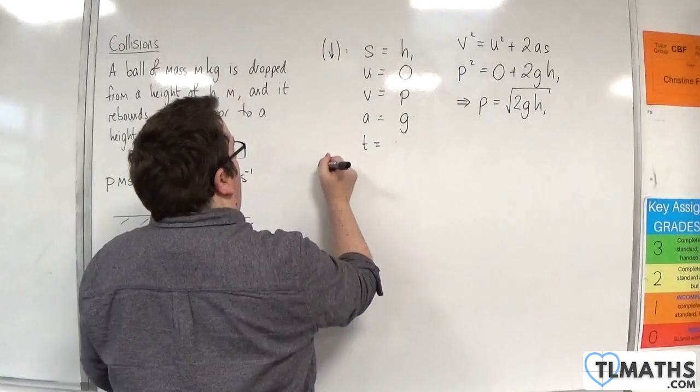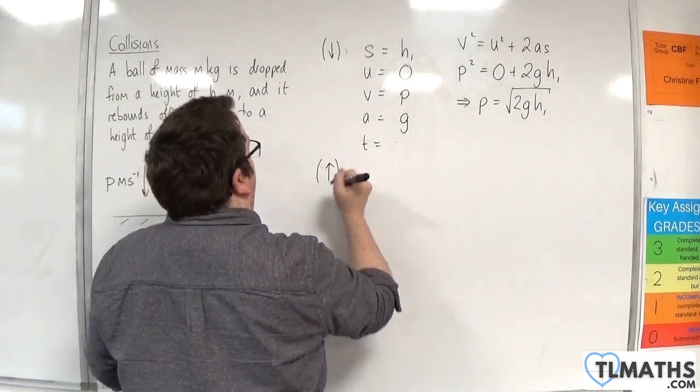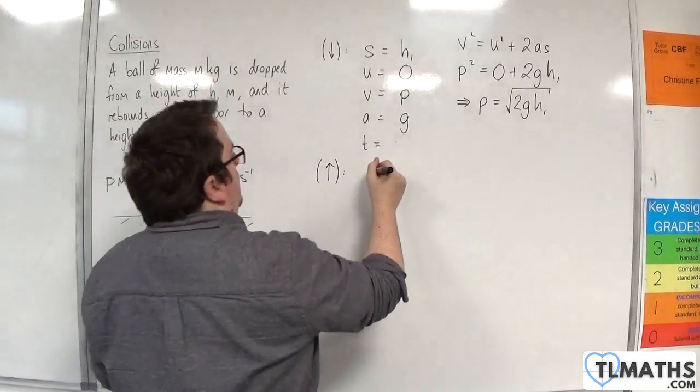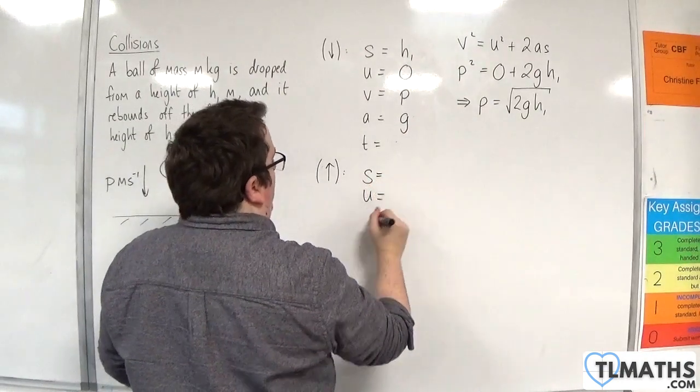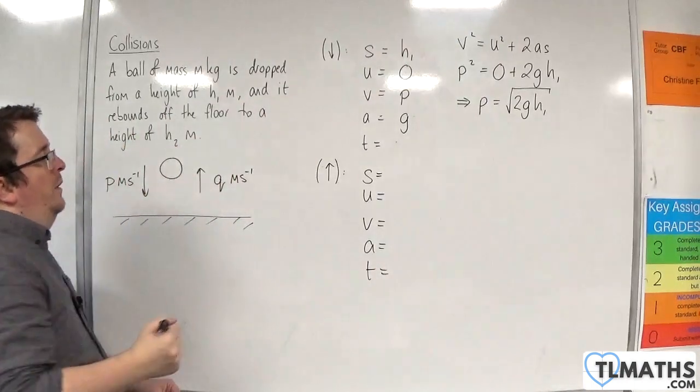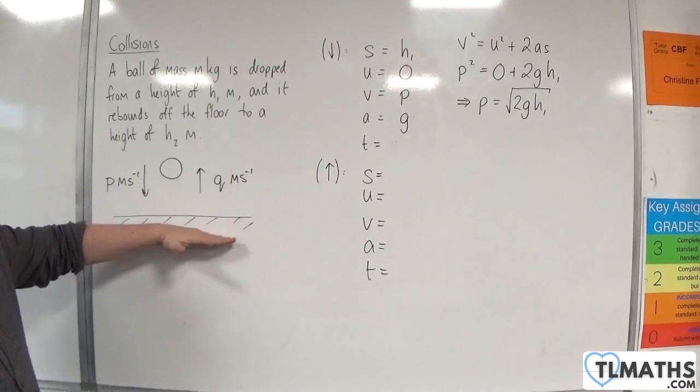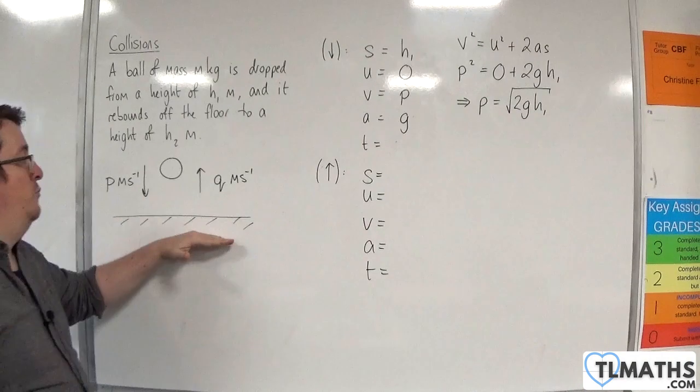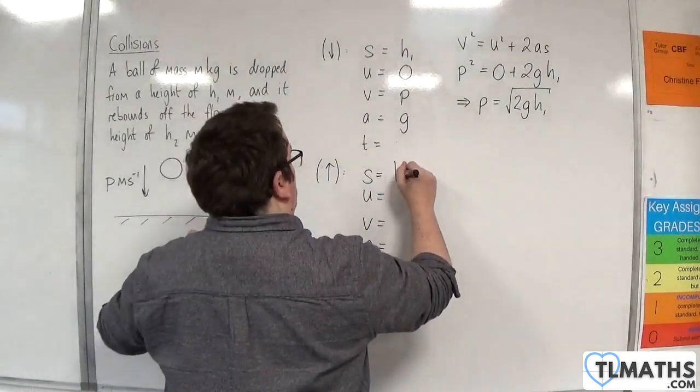Now we'll take a look at the after. And taking upwards is positive. So again we'll do suvat. So from the ground up to its height after the rebound will be h2.